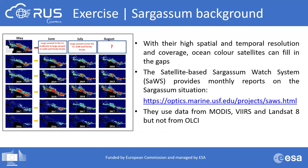With their high spatial and temporal resolution and coverage, ocean color satellites can help fill in the gaps. For example, the satellite-based Sargassum Watch System provides monthly reports based on MODIS, VIIRS, and Landsat 8 images. It has not yet incorporated data from OLCI.